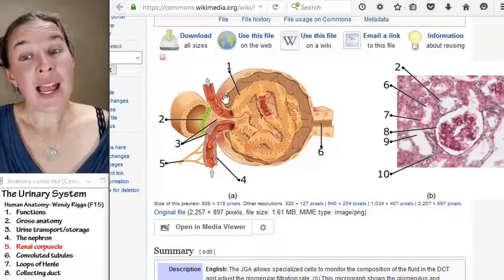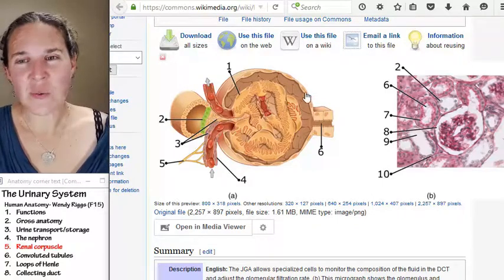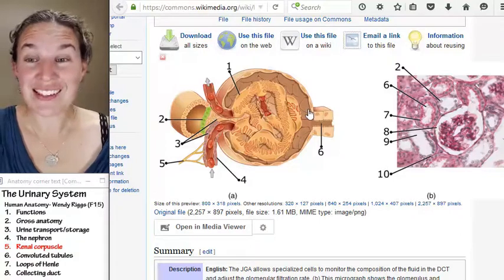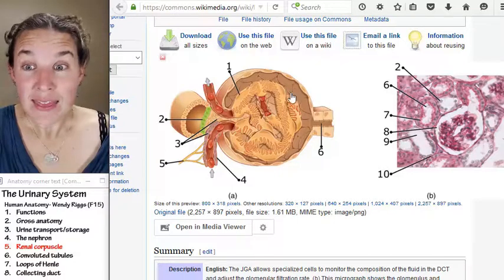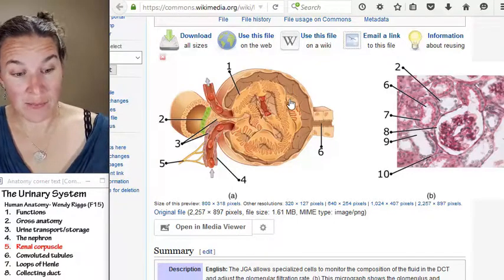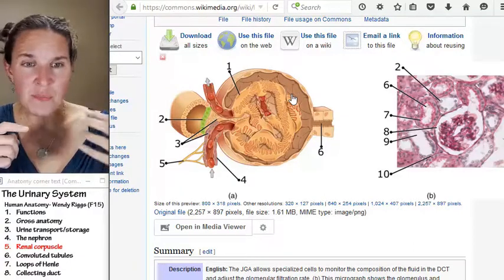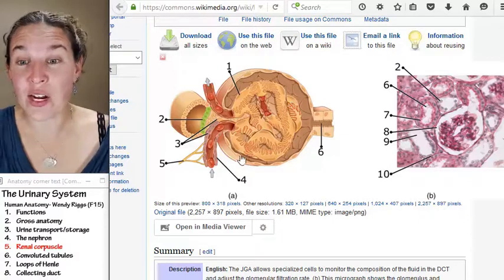The parietal layer of Bowman's capsule is, what kind of tissue is that? It's simple squamous epithelium. And look at the space in between there. That's the capsular space. That's actually an actual, it's not a potential space. It's an actual space where the filtrate gathers.